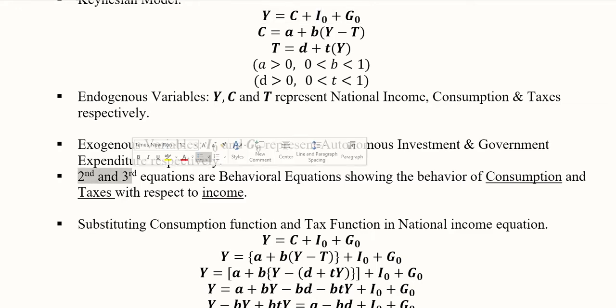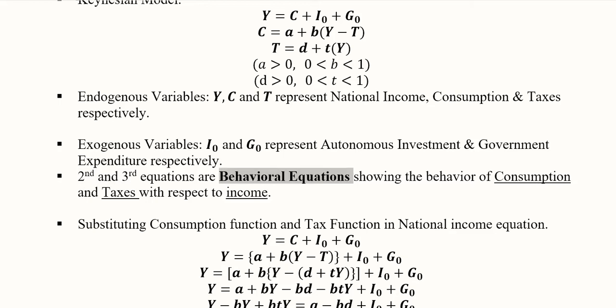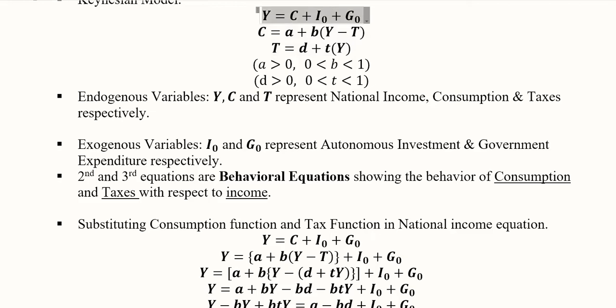The second and third equations are behavioral equations showing how consumption and tax behave with respect to income. Consumption is determined by income and tax, while tax is determined by the level of income. The first equation is a definitional equation.